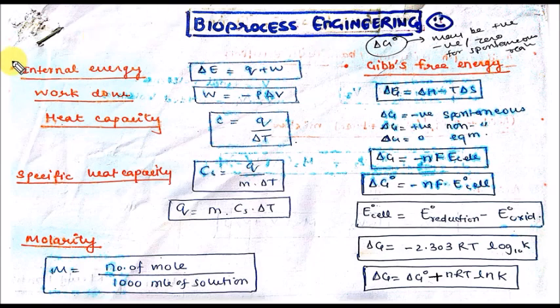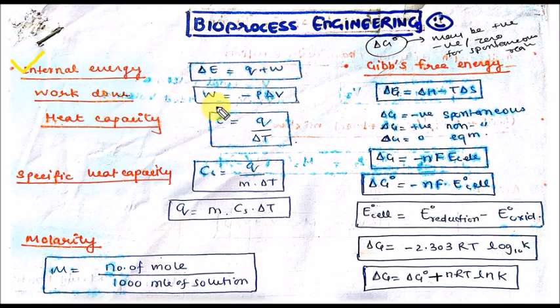The internal energy formula is delta E equal to Q plus W, that is the heat and work done on the system. The formula of work done is equal to minus P, that is external pressure, into the change in volume.